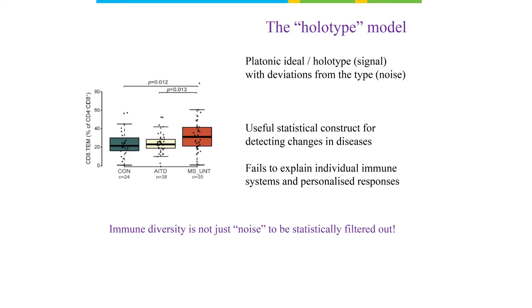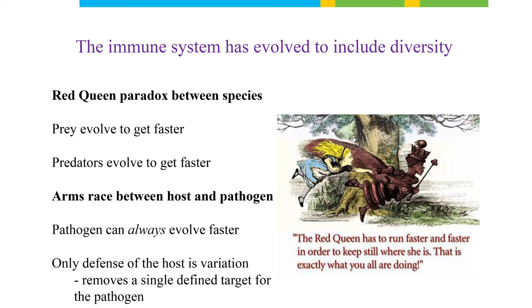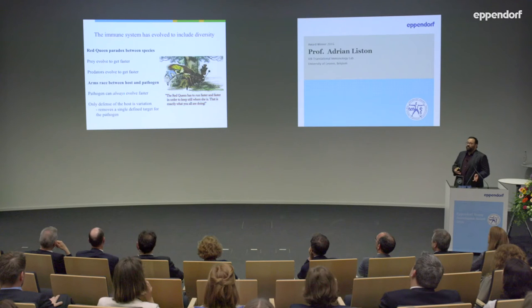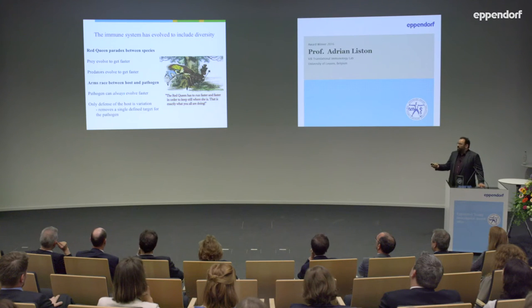The point I really want to make is that diversity in the immune system is not just a statistical problem to overcome with a large n — it's not noise to filter out. We need to understand it because diversity in the immune system is an evolved feature: a feature, not a bug. The reason is what we call the Red Queen paradox in evolution. In a predator-prey relationship, both species constantly evolve — the prey to get faster, the predator to catch them — an ongoing arms race.